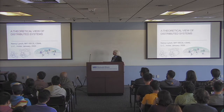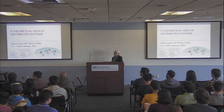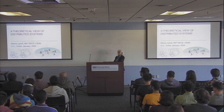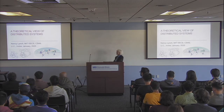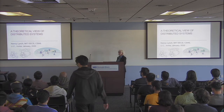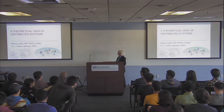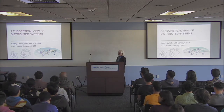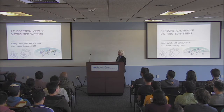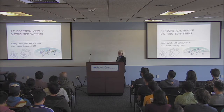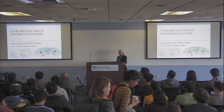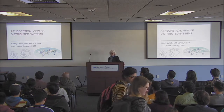Nancy has had a very distinguished history in distributed computing. Almost every one of us, at some point in some class, if not now, in the past, have learned of her impossibility results. Today she's going to go over several of those impossibility results. I explicitly remember one of her pieces of work, an early piece of work titled '101 Impossibility Results in Distributed Systems.' There are some core results that people working in distributed systems should be trying to understand.